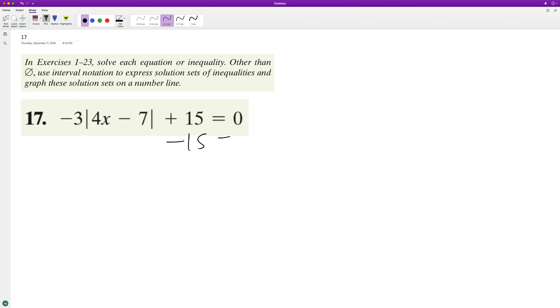So subtract 15 from both sides. And then we have negative three times four x minus seven, equals negative 15. That's sloppy. And then divide by negative three. So we get five. So we have four x minus seven equals five.